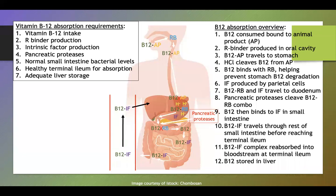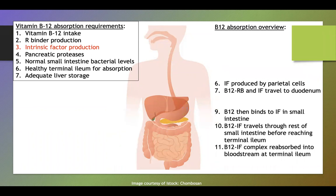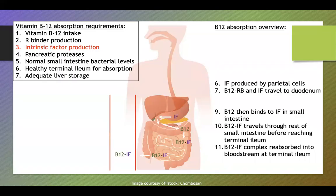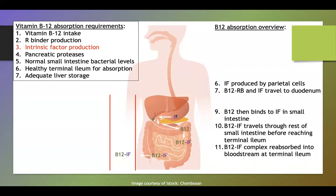Here was our B12 absorption slide earlier. Intrinsic factor is one of the requirements for appropriate B12 absorption. Intrinsic factor is produced, then binds to B12 somewhere in the small intestine, travels with B12, and gets absorbed into the bloodstream and liver. If we don't have intrinsic factor, B12 cannot get into your bloodstream, so you'll develop a B12 deficiency. That is what happens in pernicious anemia.